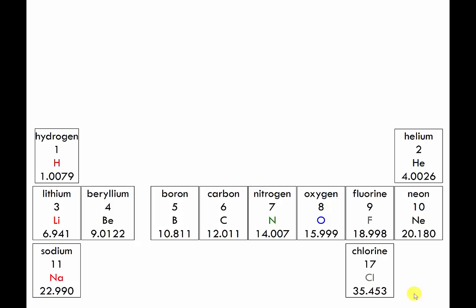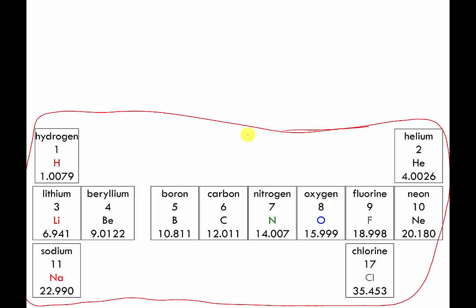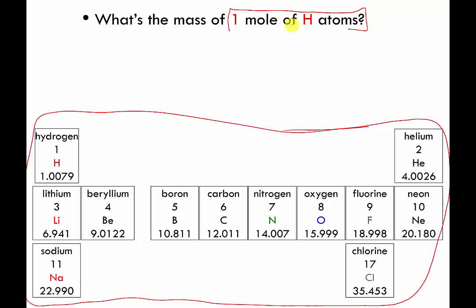In this video I'm going to introduce a new term — though we've already been talking about the concept in the past couple of videos. Here's a piece of the periodic table we'll use for the next bunch of questions. First question: what's the mass of one mole of hydrogen atoms? One mole of hydrogen atoms — about 6.02×10²³ H atoms — weighs about one gram. For these videos it's okay to round to the nearest whole number. We're going to use these numbers from the periodic table; you look them up rather than memorize them.